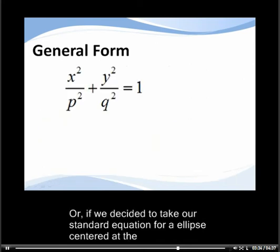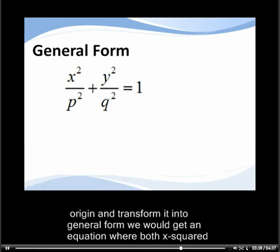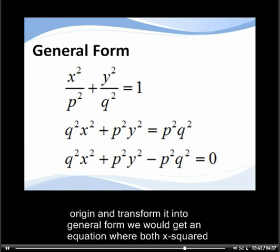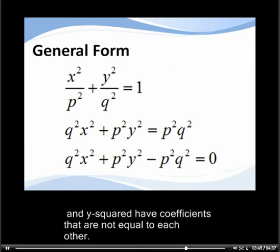Or if we decided to take our standard equation for an ellipse centered at the origin and transform it into general form, we would get an equation where both x squared and y squared have coefficients that are not equal to each other.